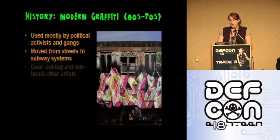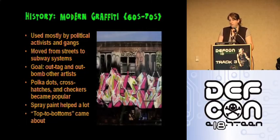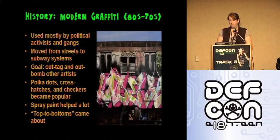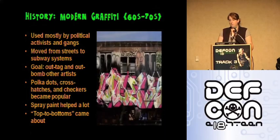In the 60s and 70s, graffiti started to gain popularity with political activists and gangs wanting to mark their territory and make themselves heard. Once it started to become more popular in places like New York City, graffiti migrated from the streets to the subway system. The main goal at that time was relatively simple: out-tag and out-bomb the other graffiti artists in the area. Bombing refers to creating large, more elaborate pieces of graffiti art, usually done by breaking into closed-off areas like subway depots after work hours to lower the chance of getting caught. The use of designs such as polka dots, cross hatches, and checkers became more popular, spray paint increased what artists could do and how fast, and top-to-bottoms spanning the entire height of subway trains became popular — leading this period to be called the Golden Age.